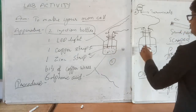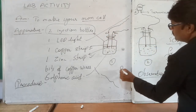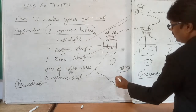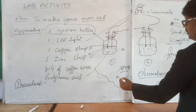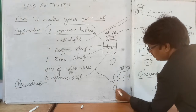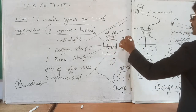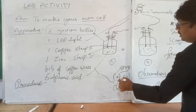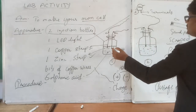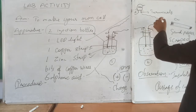How is current produced here? The sulfuric acid reacts with the copper and zinc strips and produces some ions — positive ions and negative ions. These ions, which are positive and negative charges, move towards the copper and zinc strip sides, and they start moving through the copper strip, copper wire, and through the LED bulb.